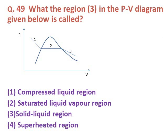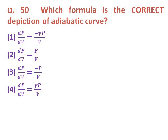Question forty-nine: What is region three in the P-V diagram called? Option one: compressed liquid region. Option two: saturated liquid-vapour region. Option three: solid-liquid region. Option four: superheated region. The correct answer is option four — superheated region.